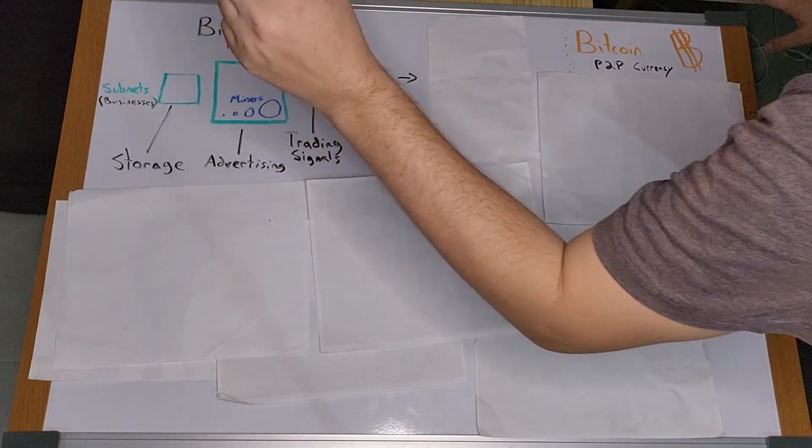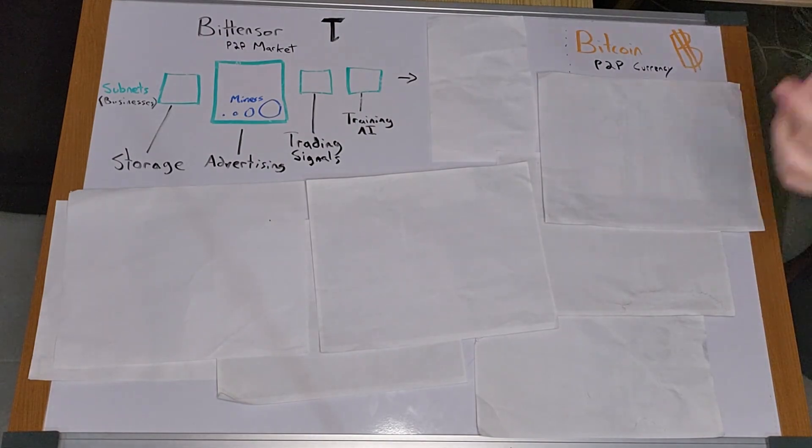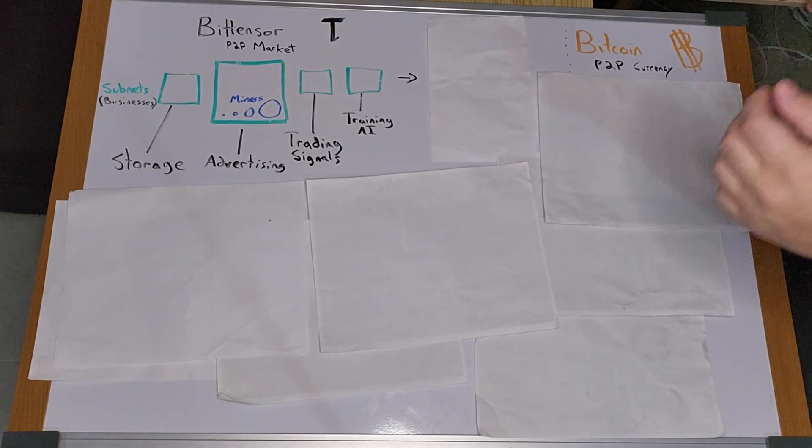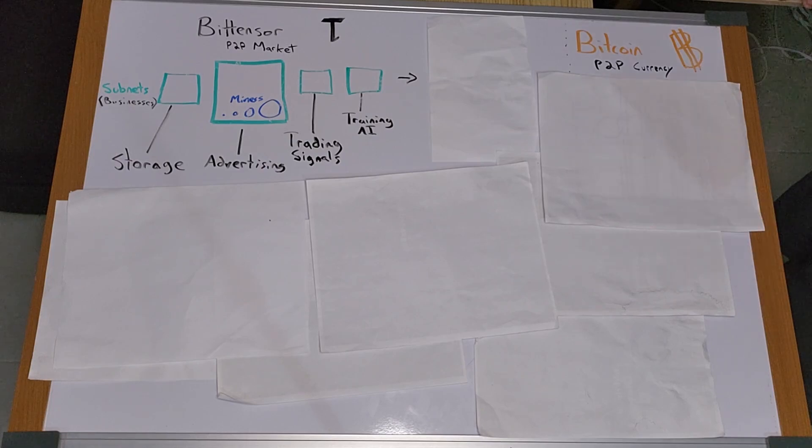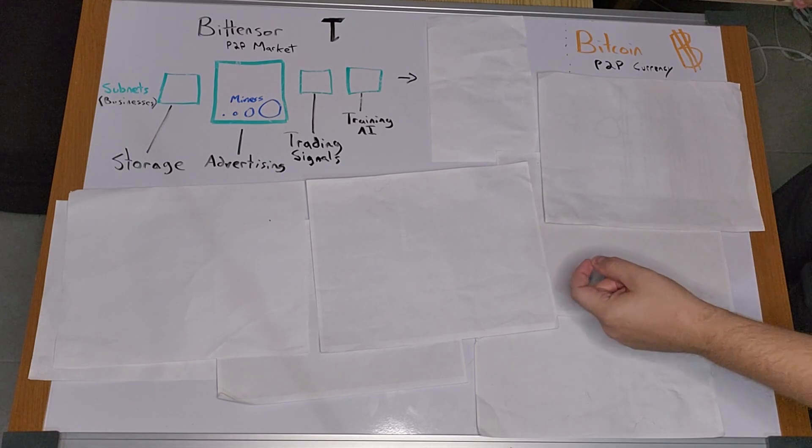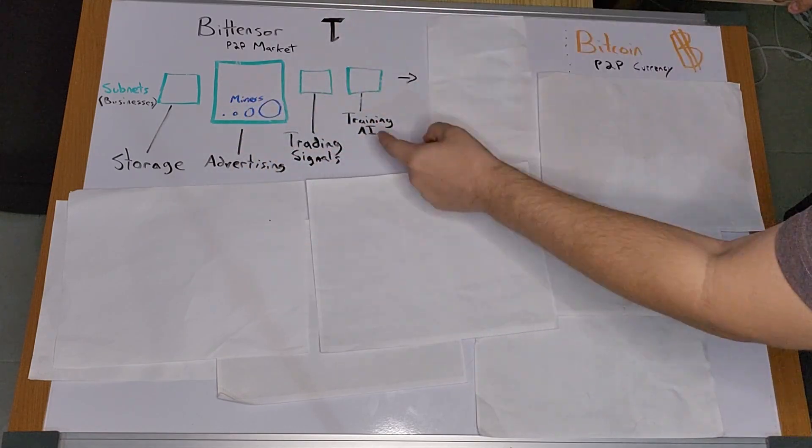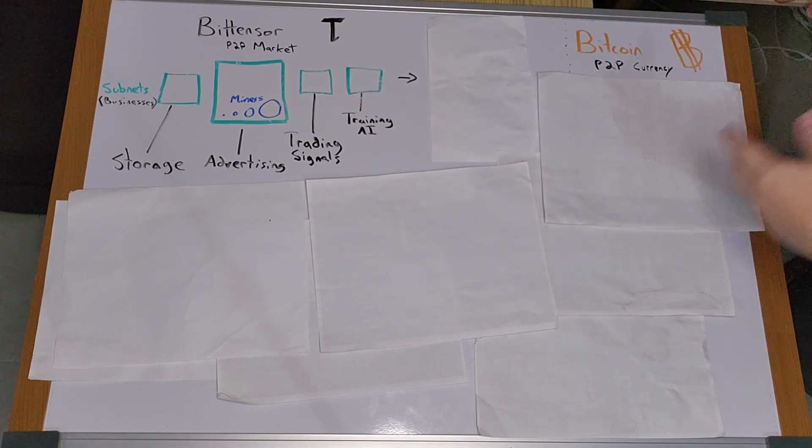For example, miners in the storage subnet compete to produce the most reliable decentralized storage. The miners that produce it the best are rewarded the most. Same goes for advertising, trading signals, training AI, AI inference, and all subnets.